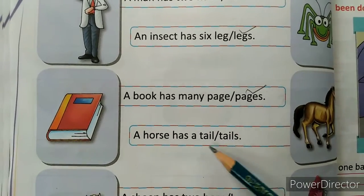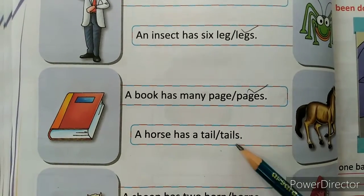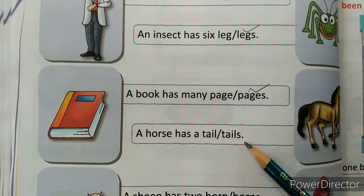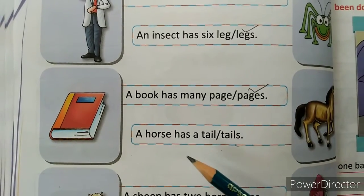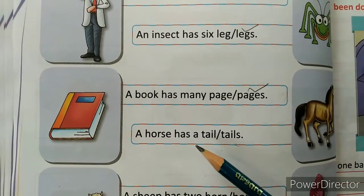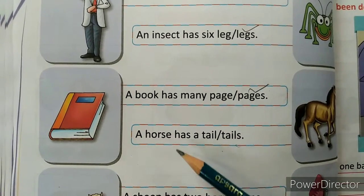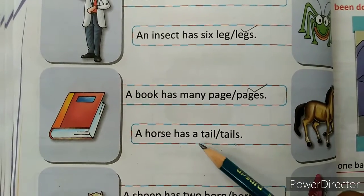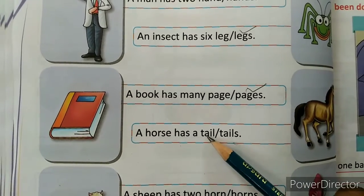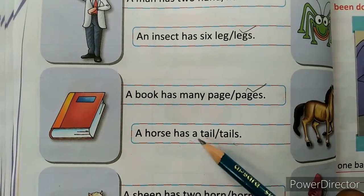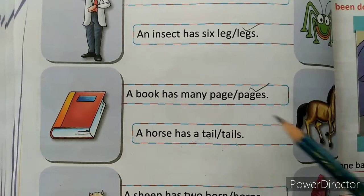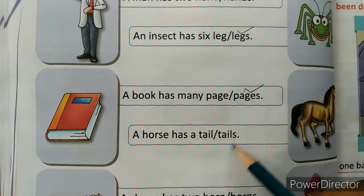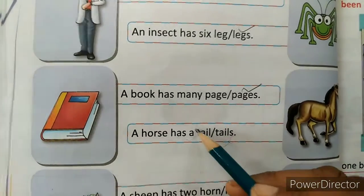Next: 'A horse has a tail' or 'tails'. Here 'a' is written, which means one — it is singular. So tick on 'tail'.